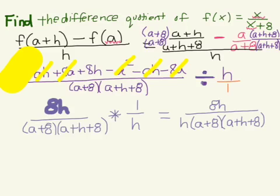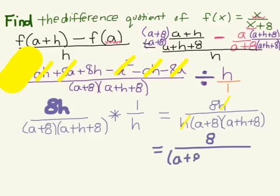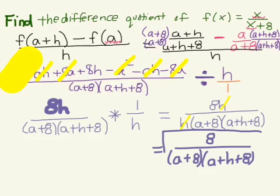We notice that in our numerator we're multiplying by h and in our denominator we're also multiplying by h, so both of those terms cancel out. Our final answer is 8 divided by a plus 8 times a plus h plus 8. This is our difference quotient.